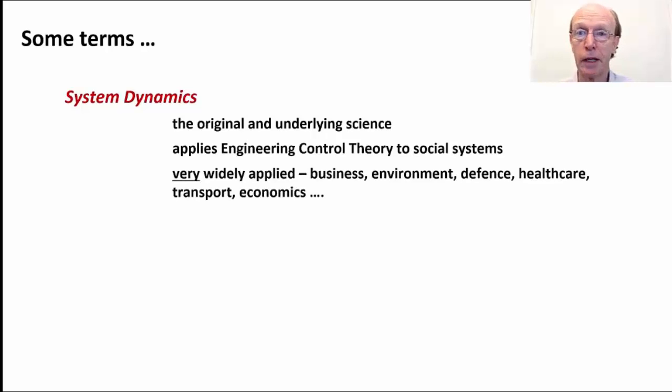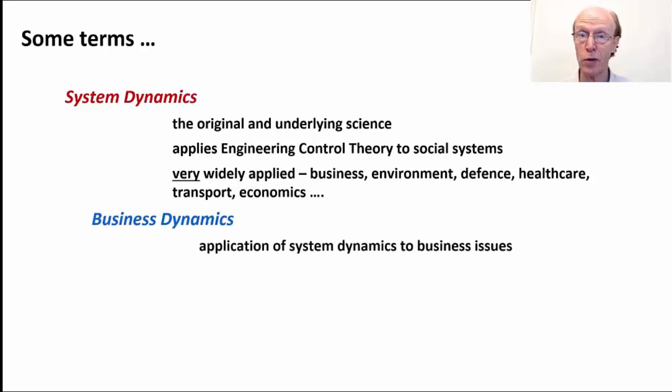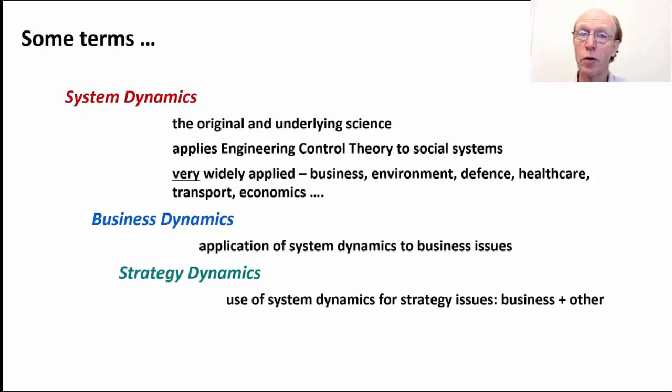So let's get some terms straight early on. First is system dynamics, which is the original and underlying science of the method that we use. In simple terms, it applies engineering control theory to social systems. We've moved a long way now in being able to capture social mechanisms as well as enterprise mechanisms and physical mechanisms in these models. It is extremely widely applied across business, environment, defense, healthcare, transport, economics, all kinds of different fields. Business dynamics is simply the application of system dynamics method and simulation to deal with business issues. I've been using the phrase strategy dynamics to refer to the use of the system dynamics method to deal with strategy issues, whether those are in the corporate field or in public services or nonprofit cases.